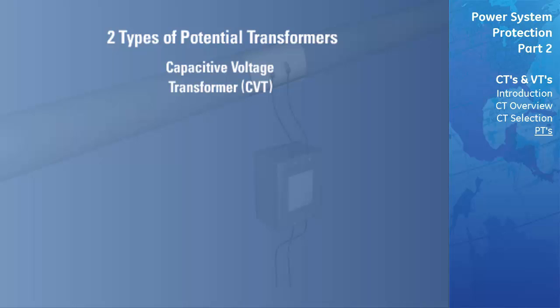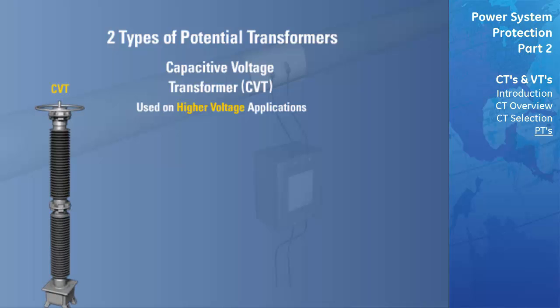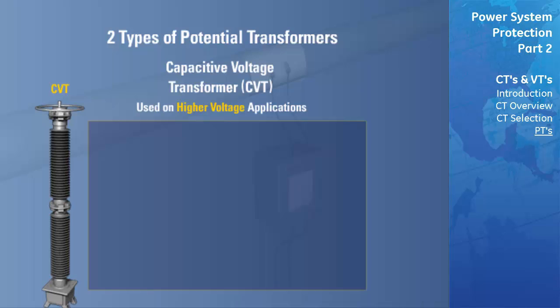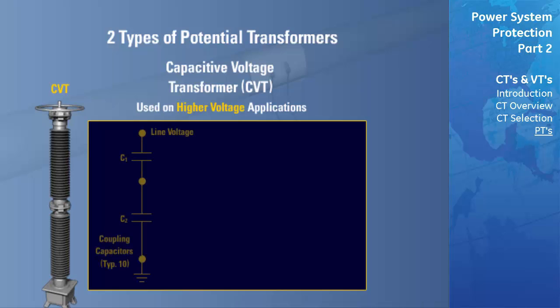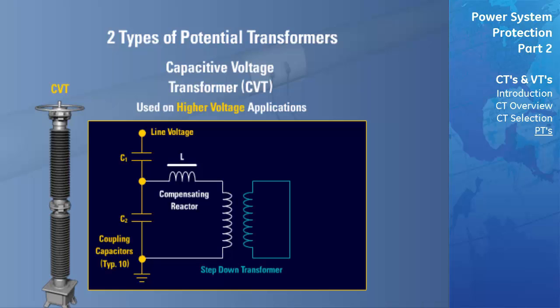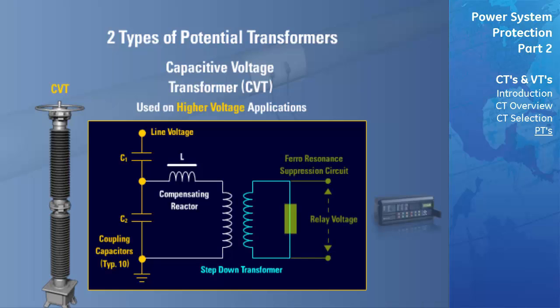Capacitor voltage transformers, or CVTs, are normally used on higher voltage applications. The CVT is basically a capacitance potential divider and consists of the following components: coupling capacitors, typically 10; a compensating reactor; a step-down transformer; and a ferro-resonance suppression circuit that is found just before the output terminals for connecting to a relay.